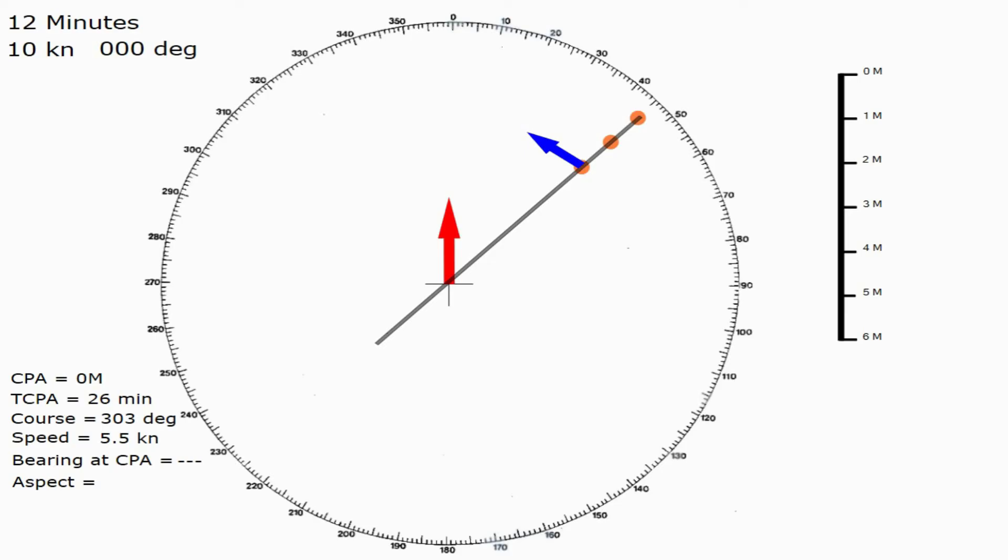Now, the aspect is going to be the bearing we are from the target vessel. So, to find that, all we're looking for is the angle between their heading or their course and the bearing to us. And we can either measure that directly from this position or we can transpose their heading to the centre and extend the lines out where we've got a nice gauge of degrees around the edge. And all we want is the difference between these.